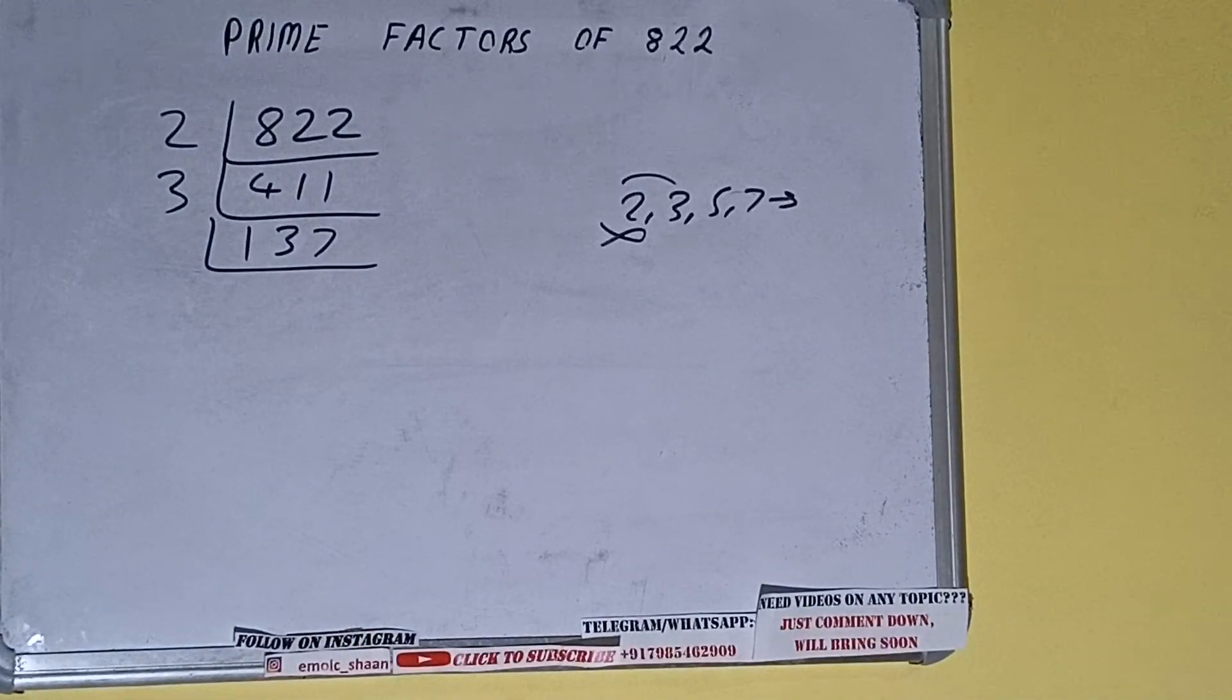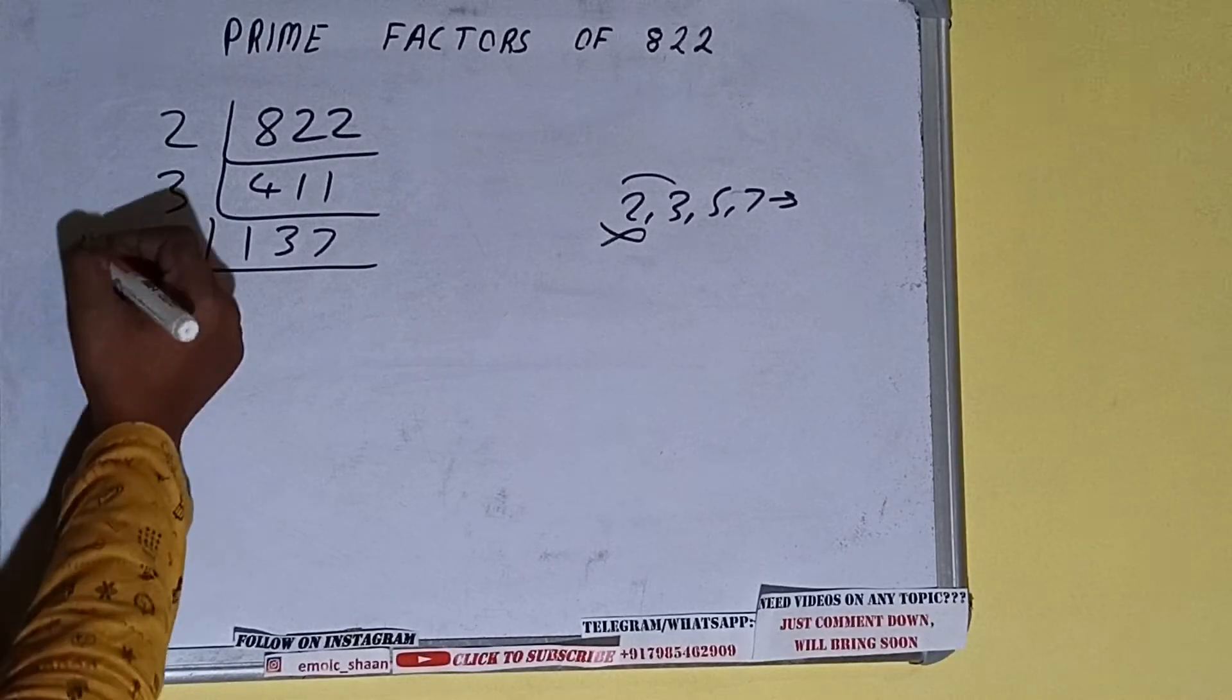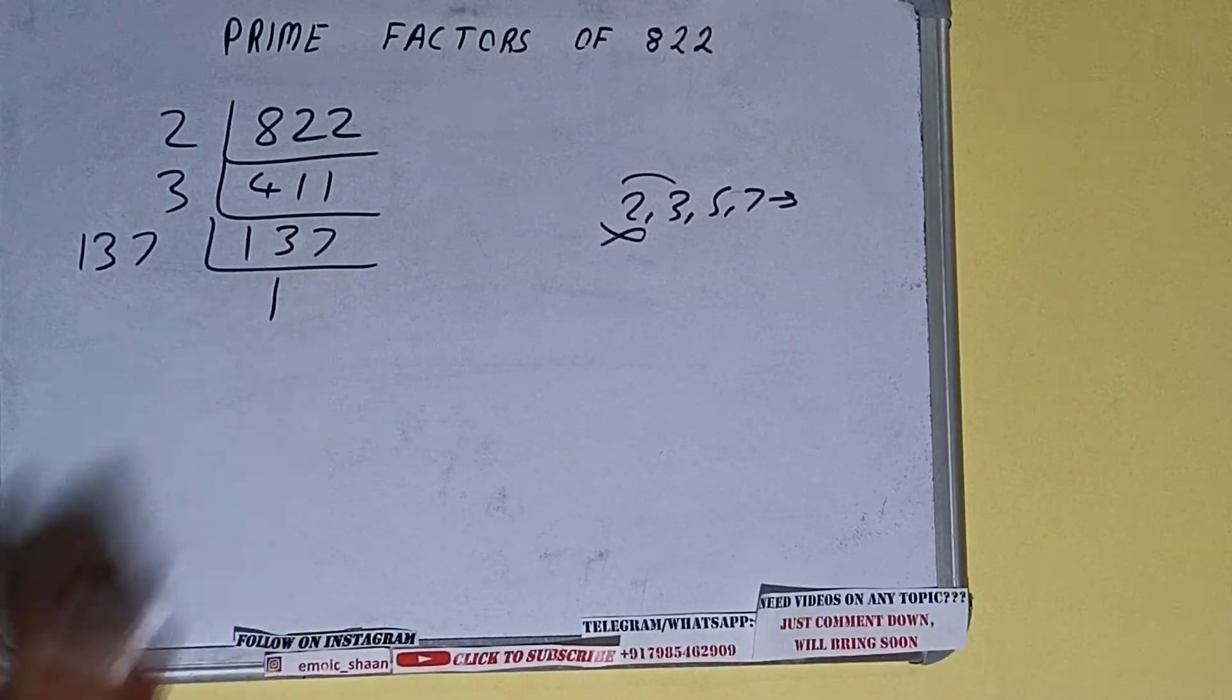Now, is this 137 further divisible by 3? The answer is no. And the number 137 is also a prime number, so it is only divisible by itself, that is 137. Once we do so, we'll be getting 1.